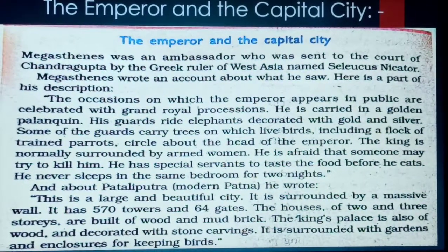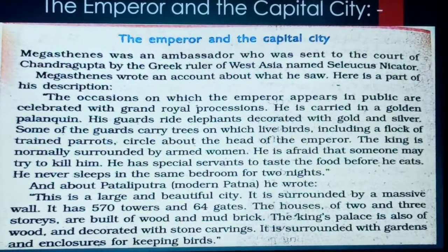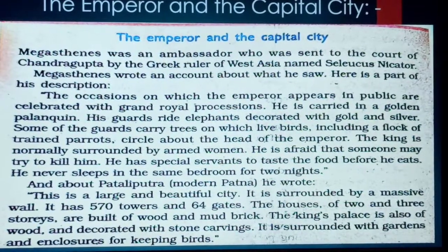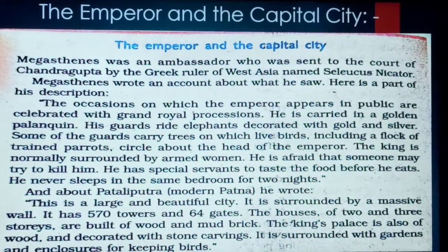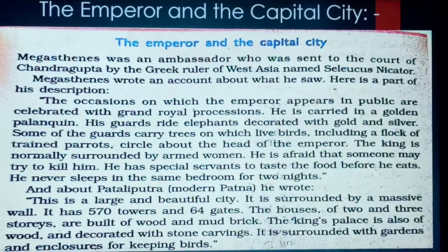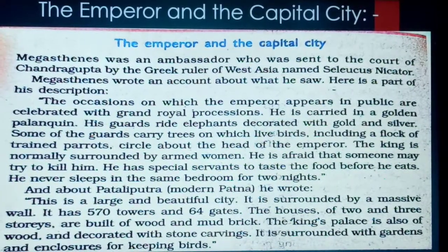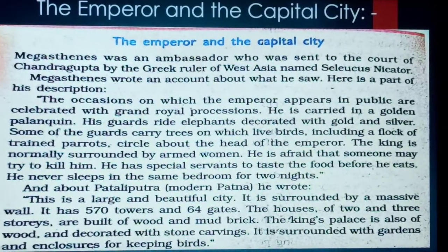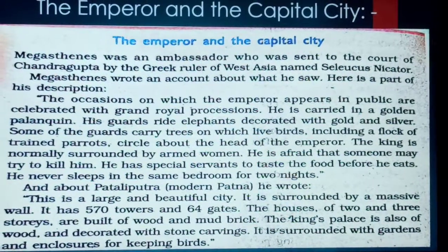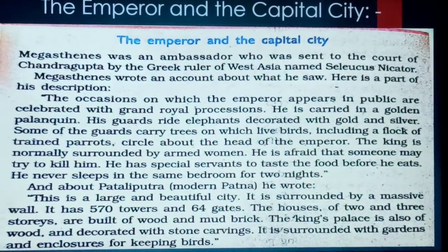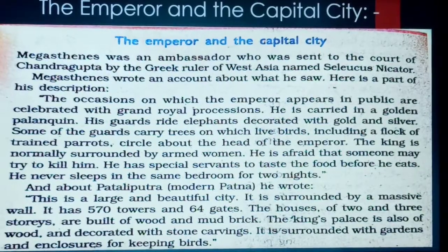About Pataliputra, Megasthenes writes that it was a very large and beautiful city surrounded by a massive wall — that is, fortifications. It had 570 towers and 64 gates. The houses of two and three stories were built of wood and mud brick. The king's palace was also of wood and decorated with stone carvings, surrounded by gardens and enclosures for keeping birds.